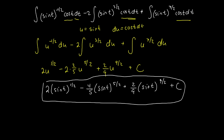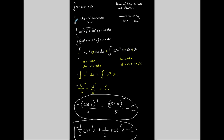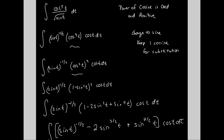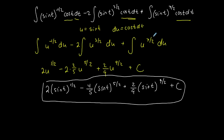To summarize: if the degree of sine is odd and positive and cosine is even, use Pythagorean identities to rewrite everything in cosine and keep that extra sine for u-substitution. In the second example, the power of cosine was odd, so we converted everything else to sine and kept that one extra cosine for substitution. The core method is the same in both cases.